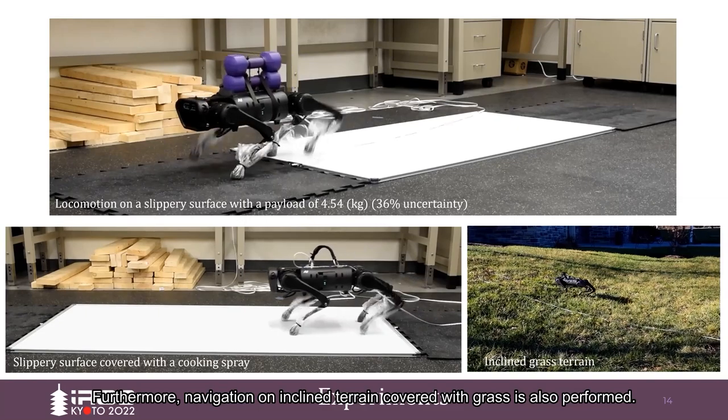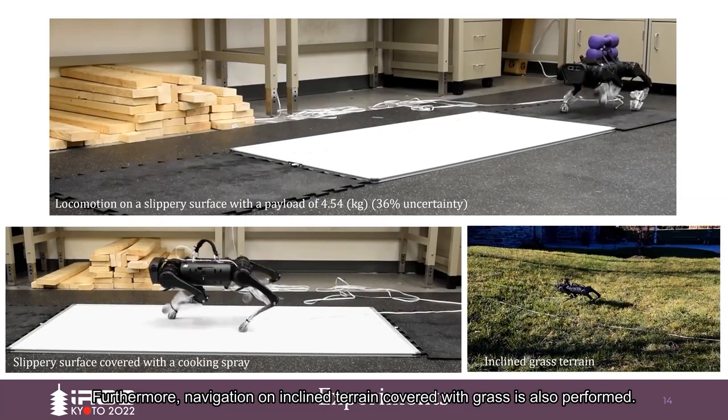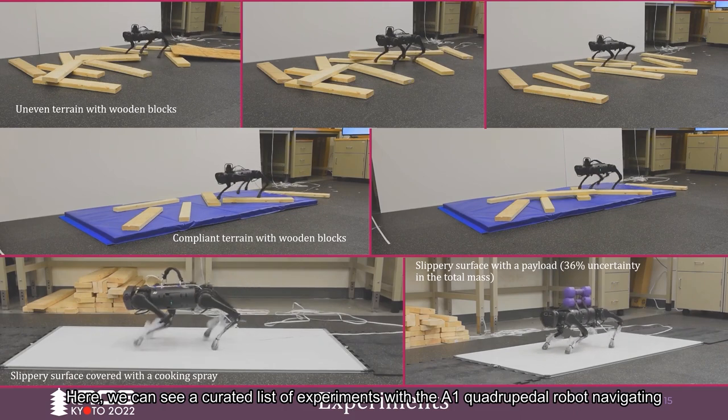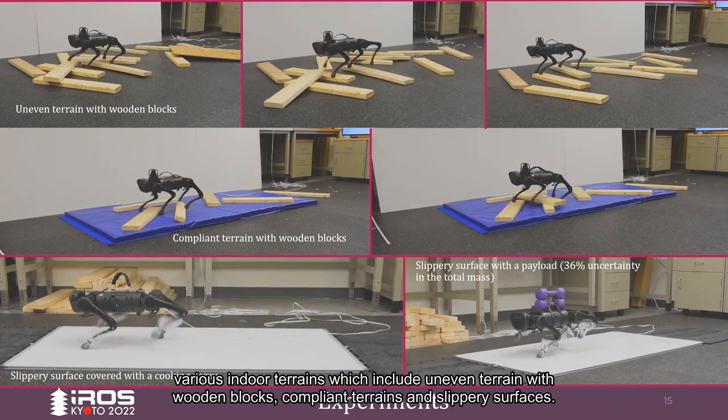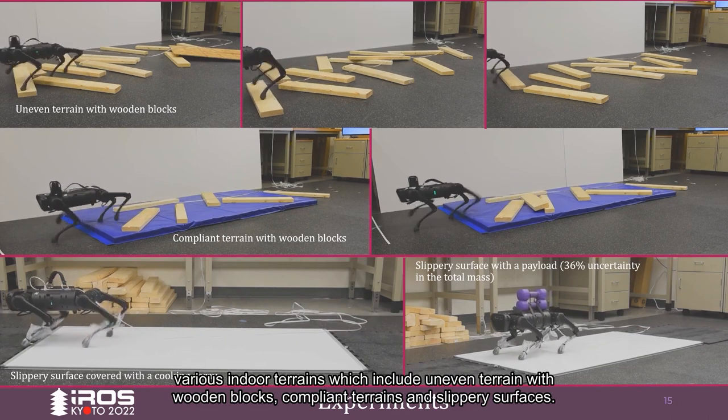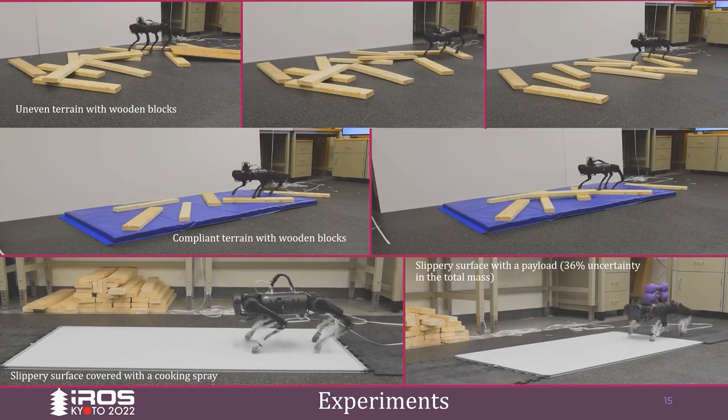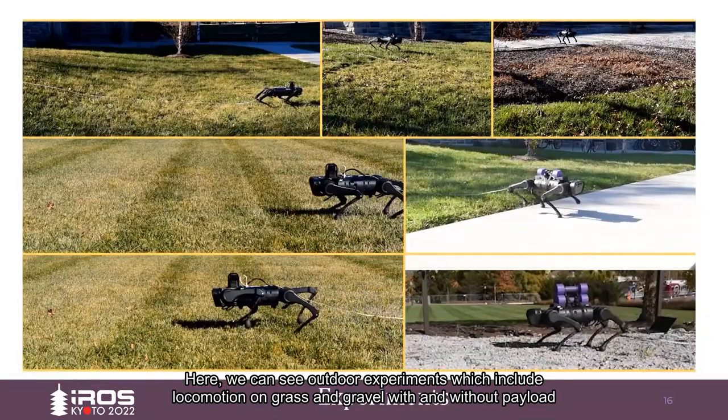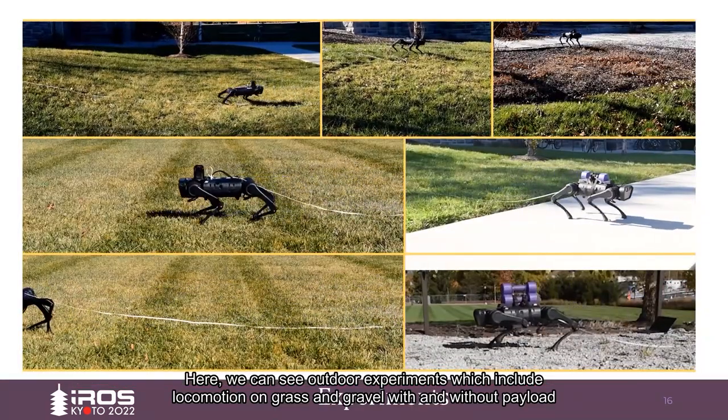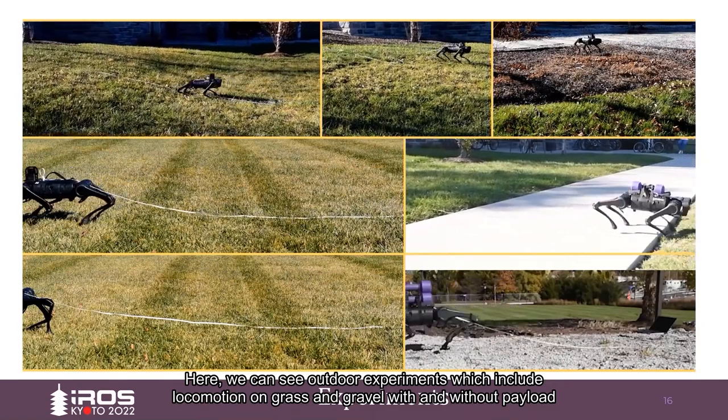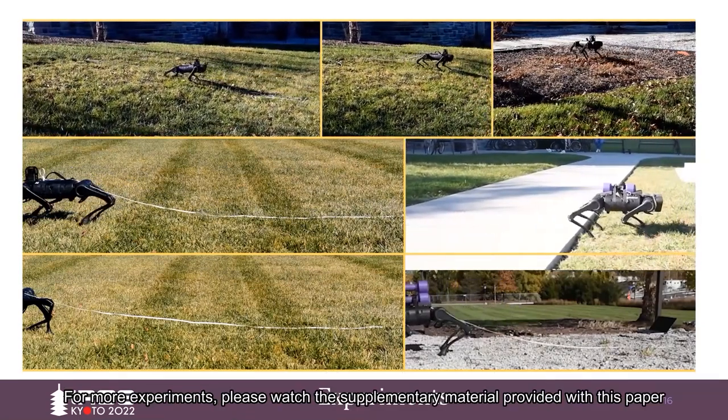Furthermore, navigation on inclined terrain covered with grass is also performed. Here, we can see a curated list of experiments with the A1 quadrupedal robot navigating various indoor terrains, which include uneven terrains with wooden blocks, compliant terrains, and slippery surfaces. Here, we can see outdoor experiments, which include locomotion on grass and gravel with and without payload. For more experiments, please watch the supplementary material provided with this paper.